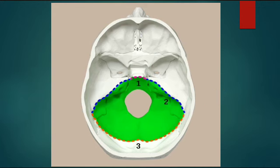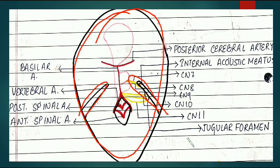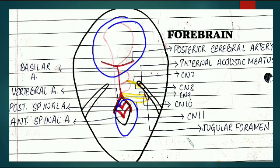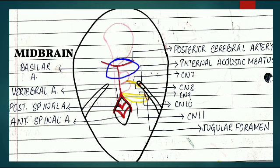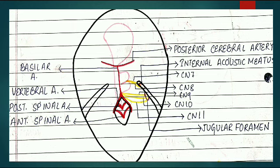Now in this diagram, this is your skull and this is your petrous temporal bone and this foramen is your foramen magnum. This pink portion is your forebrain, this portion is your midbrain, this is your hindbrain - pons and then medulla - and then it is continuing as the spinal cord, with the brain stem entering the foramen magnum.